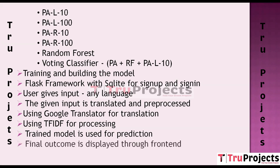The final outcome — the categorization or classification of the user's input — is displayed to the user through the front-end interface created with Flask. Users can see the result, which typically includes the predicted category or label of the input text.